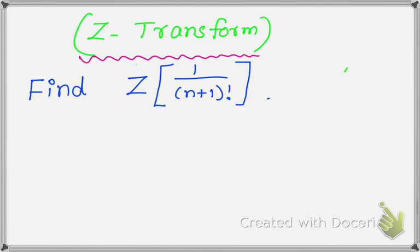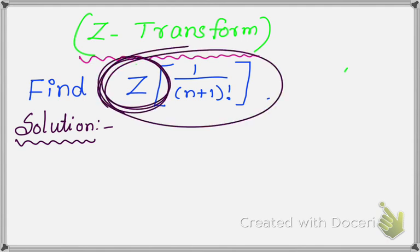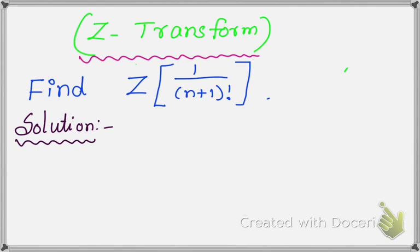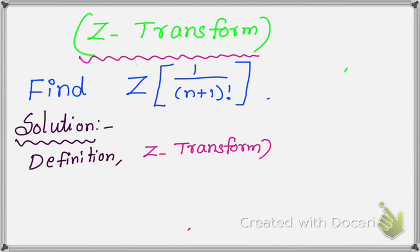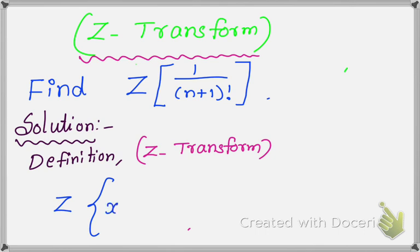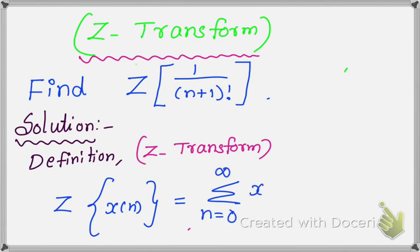For the solution, since this problem is from Z transform, we are going to write the definition of Z transform. The definition is: Z of X(n) equals summation from n=0 to infinity of X(n) times Z to the power of minus n. This is the definition.